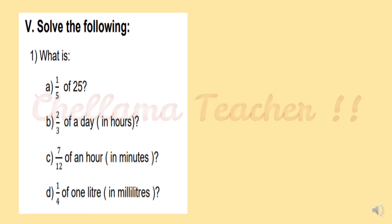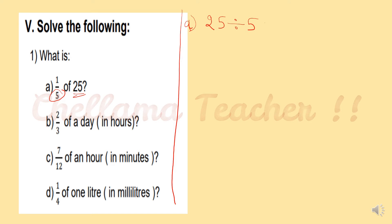Part 5: Solve the following. Question 1, Part A: 1 fifth of 25. Step 1 — write the given number 25, then divide by the denominator 5. So 25 divided by 5. Recall the fifth table: 5 fives are 25, so the answer is 5. Therefore, 1 by 5 of 25 is equal to 5.